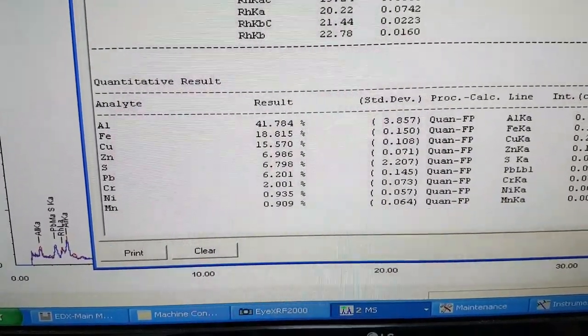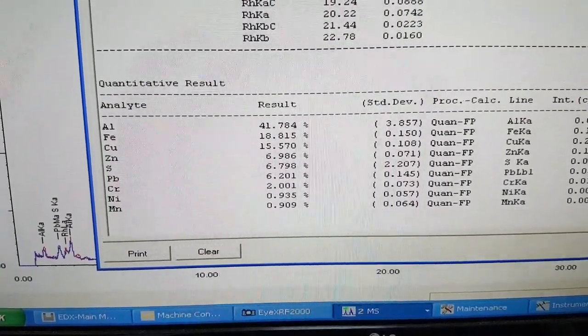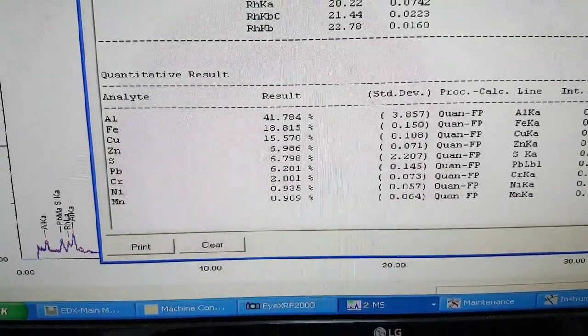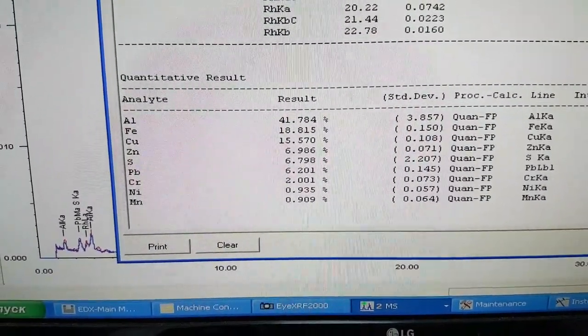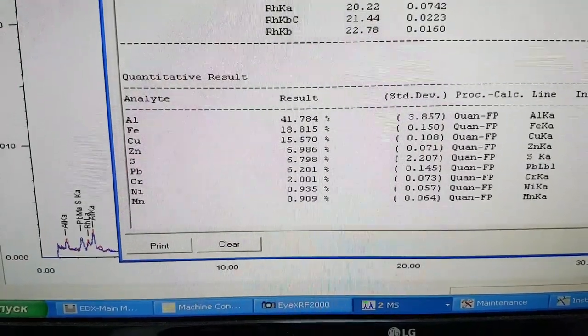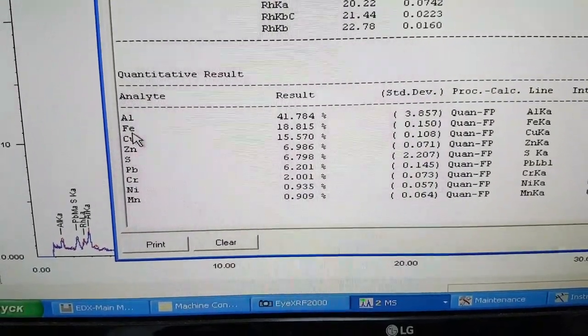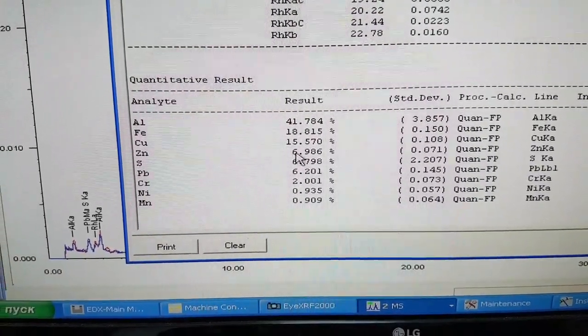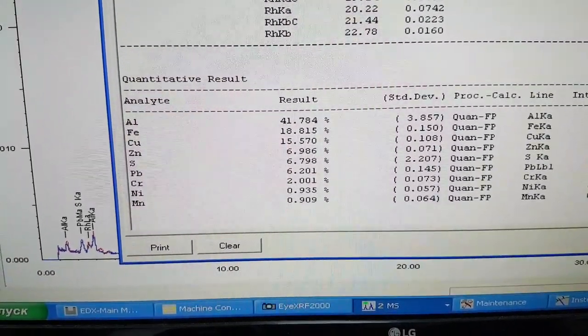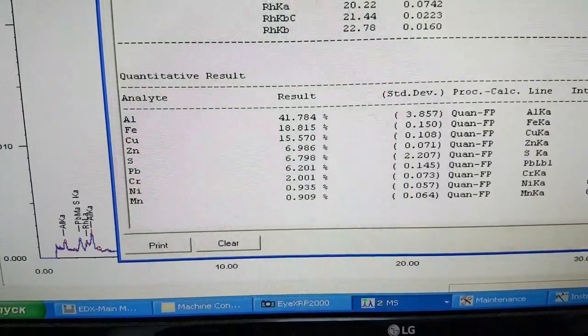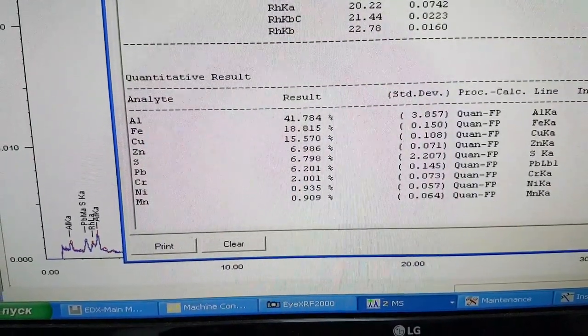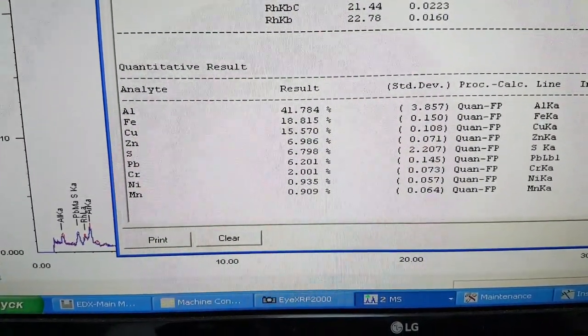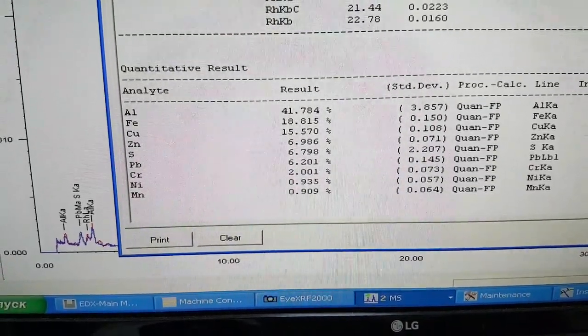18% on the iron, 15.6% on the copper, and zinc is 6.7%. And the second sample: iron, copper, and zinc are 18.8%, 15.6%, and nearly 7% on the zinc. They're pretty much spot on. That's really made me happy.